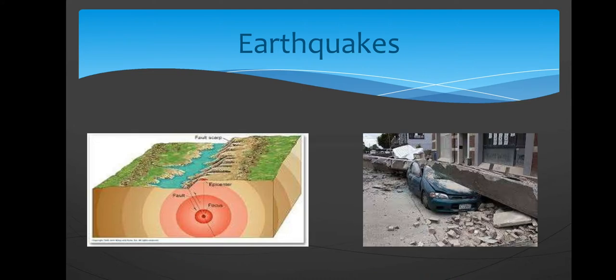First, we will discuss about earthquake. An earthquake is a shaking of the ground caused by the sudden breaking and movement of tectonic plates on the earth's rocky outermost crust. The edges of the tectonic plates are marked by faults. Most earthquakes occur along the fault lines when the plates slide past each other or collide against each other. The shifting masses send out shock waves powerful enough to alter the surface of the earth, thrusting up cliffs and opening great cracks in the ground. Earthquakes also cause collapse of buildings and other man-made structures, broken power and gas lines, landslides, snow avalanches, and tsunamis.